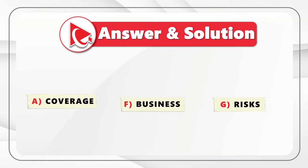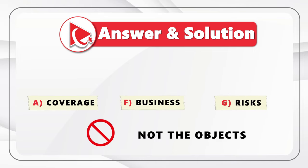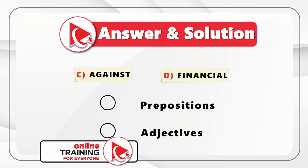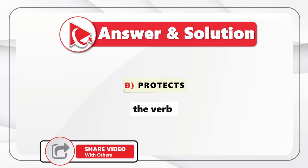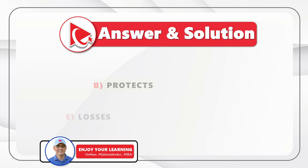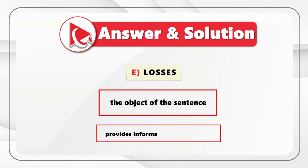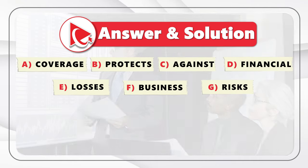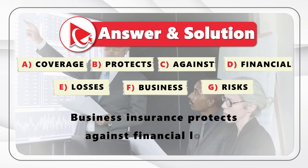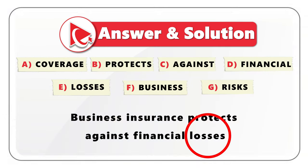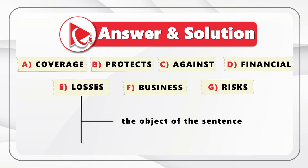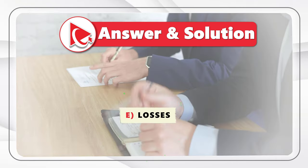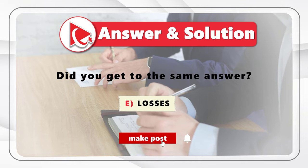The word 'protects' is the verb and it provides valuable information in the sentence. The word 'losses' is the object of the sentence, and it provides information about what business insurance protects against. Based on this information, let's build the sentence: 'Business insurance protects against financial losses.' Based on this, we can determine that the last word in the sentence is 'losses.' This is the object of the sentence, and it also provides a specific type of protection. So the correct answer here is Choice E - losses. Did you get to the same answer? If not, please make sure to post your answer and solution in comments.